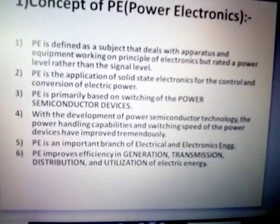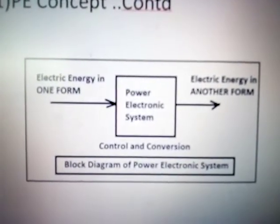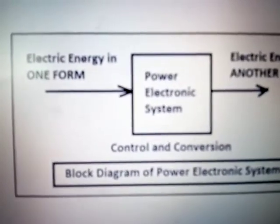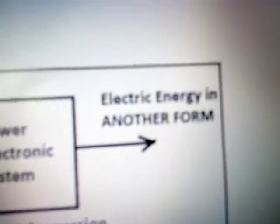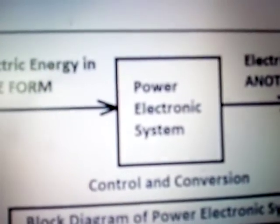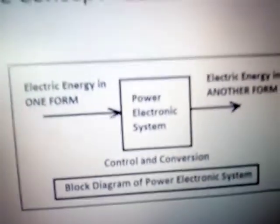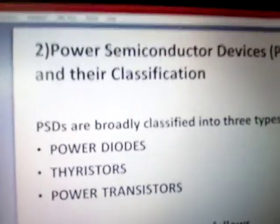The block diagram of power electronics shows the power electronic system, which converts electrical energy from one form into electrical energy in another form. The technique used is control or conversion. Power electronic devices use control and conversion techniques for this transfer.